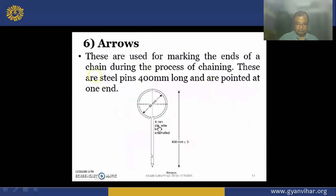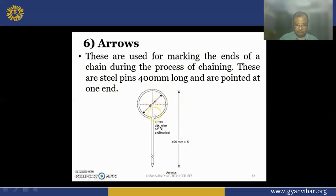Arrows are used for marking the ends of the chain during the process of chaining. They are 40 centimeters in length, circular at the top for handling, with a diameter of 5 centimeters at the top. They are made of black enamel steel.